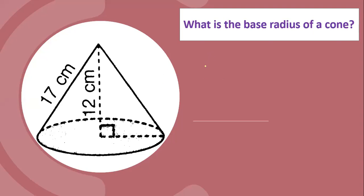So base squared equals slant height squared minus height squared. Or b is equal to the square root of the slant height, 17 squared, minus the height, 12 squared.